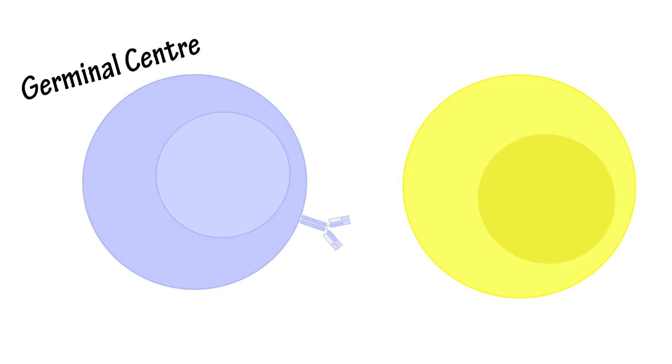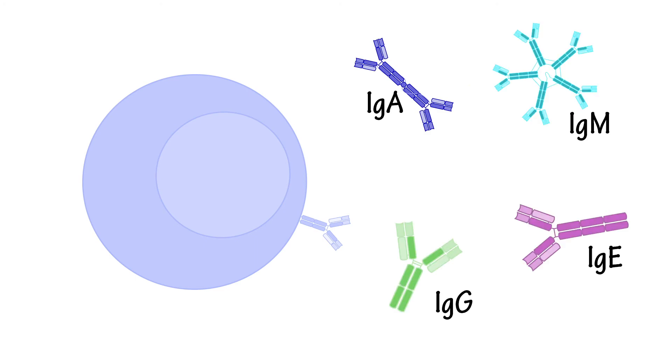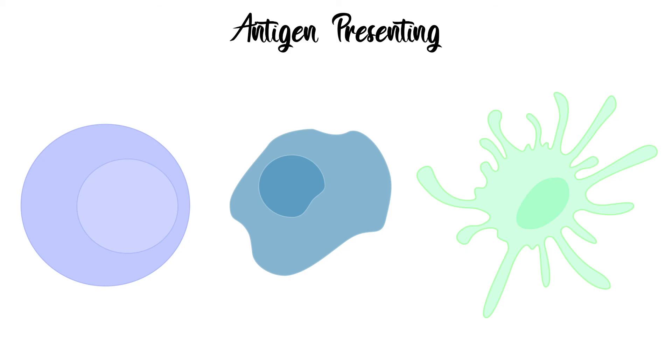B cells are usually activated by T cells in the lymph node, but can also be activated independent of T cells. They release proteins called antibodies to neutralize pathogens or sensitize them to other immune cells. B cells, along with dendritic cells and macrophages, can be classed as antigen-presenting cells, antigen being parts of the phagocytosed pathogen.